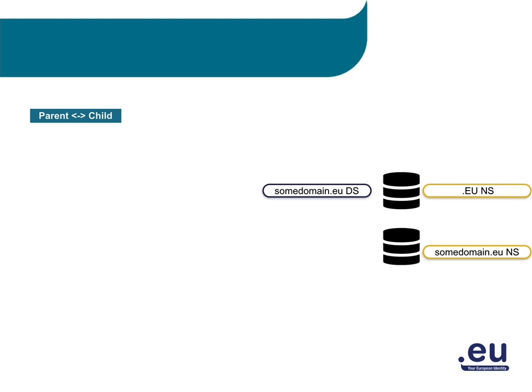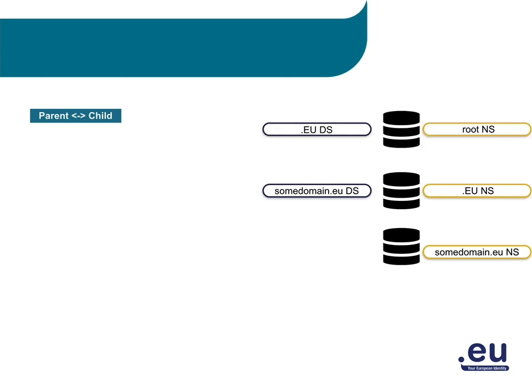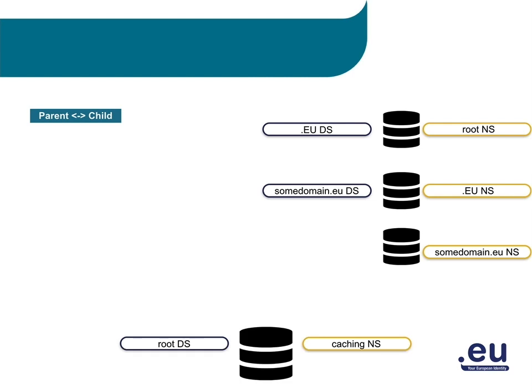We still need to check the DNS keys of EU. For this, we do the same as before — we ask the parent, which in this case are the root nameservers, for the DS resource records of EU. When we get a response from the root nameservers, the answer is also signed. But we cannot ask the parent of the root nameservers for the DS resource records of the root nameservers, because the root nameservers don't have parents. The answer is that each validating nameserver in the world has those DS resource records locally. The DNS keys of the root nameservers can be checked with the DS resource records of the root nameservers, which are securely retrieved via email or other means.